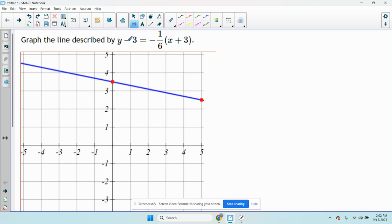Okay, so this is graph the line described by y minus 3 equals negative 1 sixth times x plus 3. You can either graph it the way it is using point-slope form, because it's written in point-slope form, or you can translate or manipulate the equation to get it into slope-intercept form.